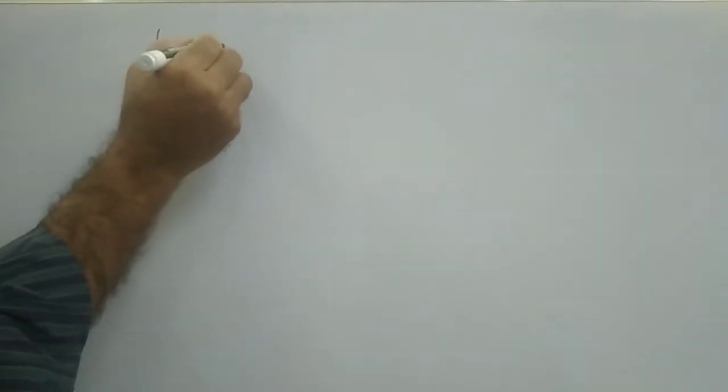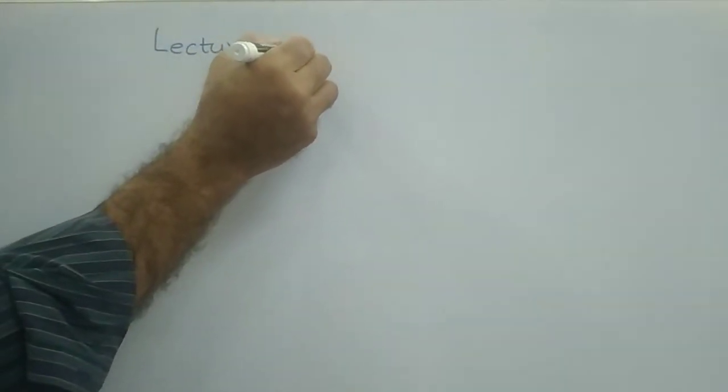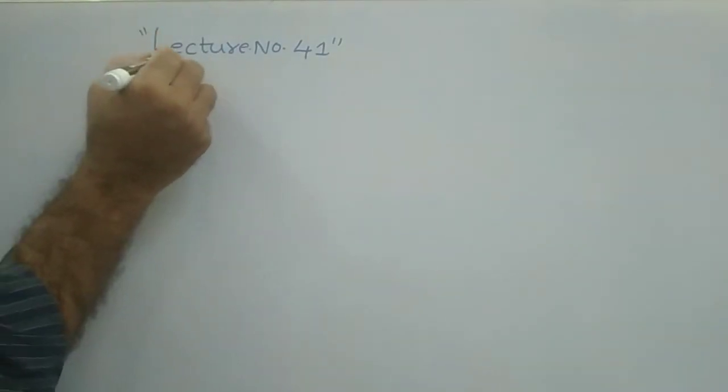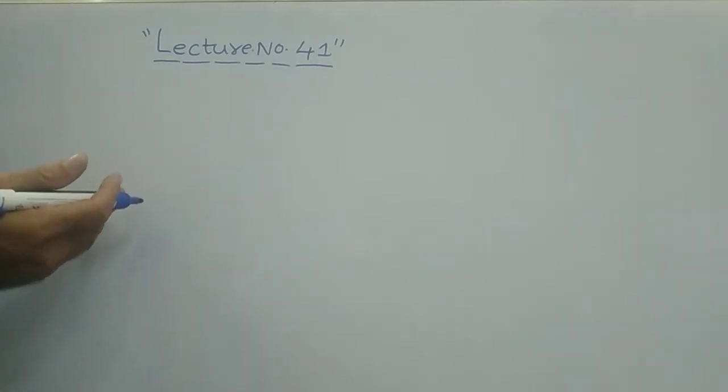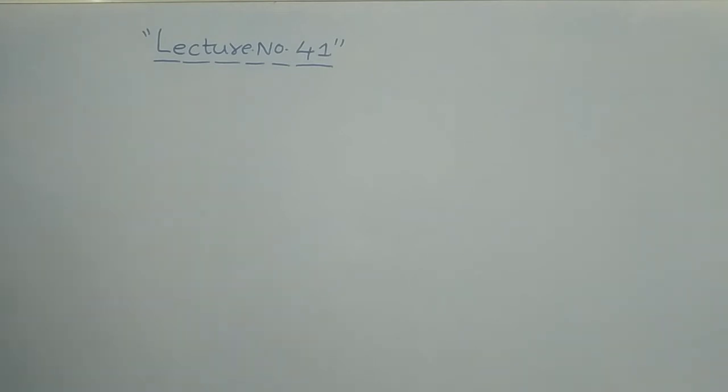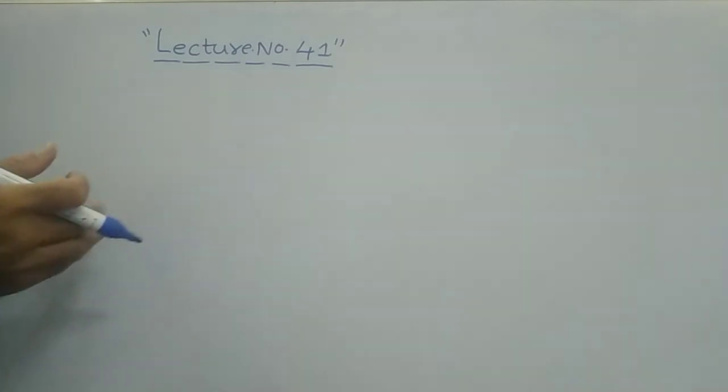Welcome back to another presentation on time domain specifications. We are seeing the steady state error for different types of systems. Today we will start lecture number 41, in which we will see what is the steady state error with the ramp input signal for different type numbers of the system. In the previous presentation we have seen for a unit step input what is the steady state error for different types of systems.